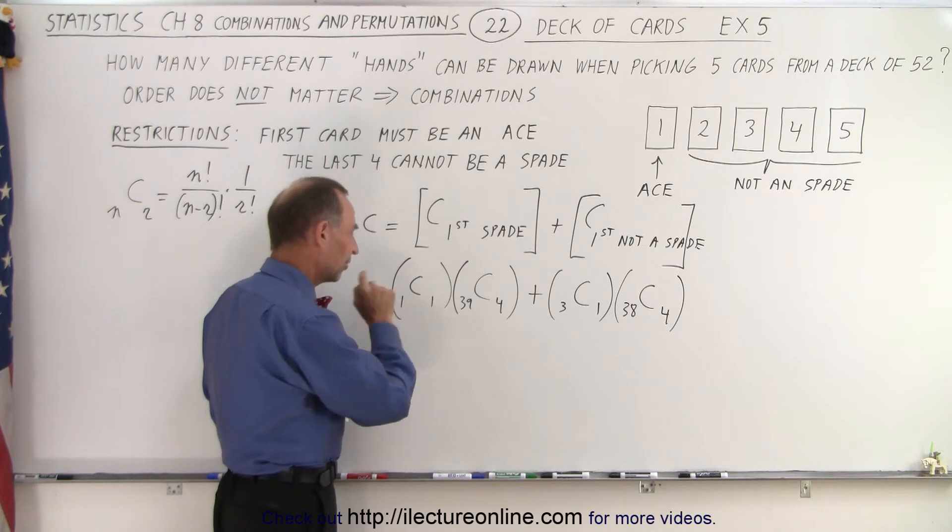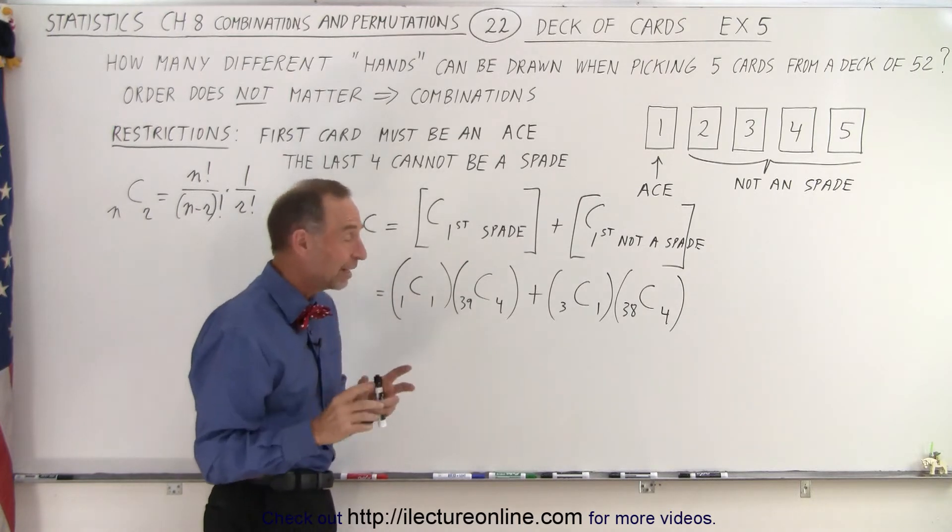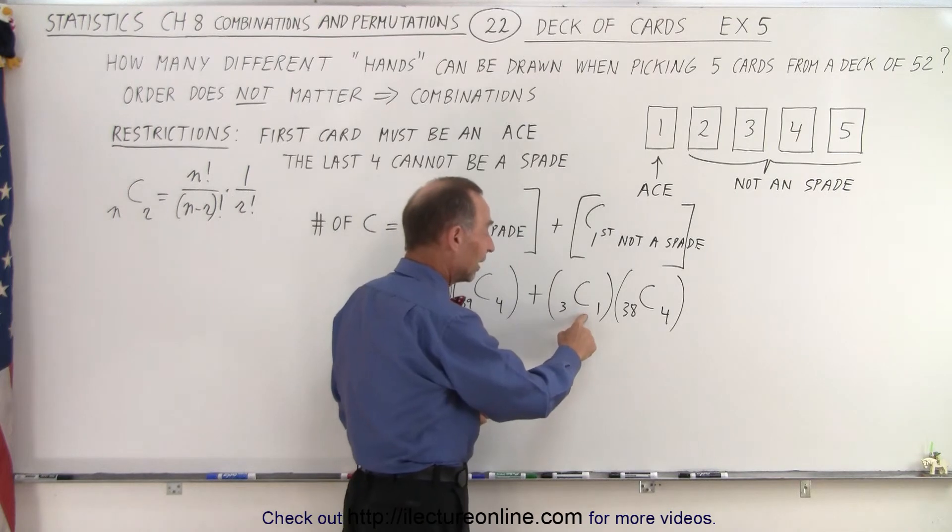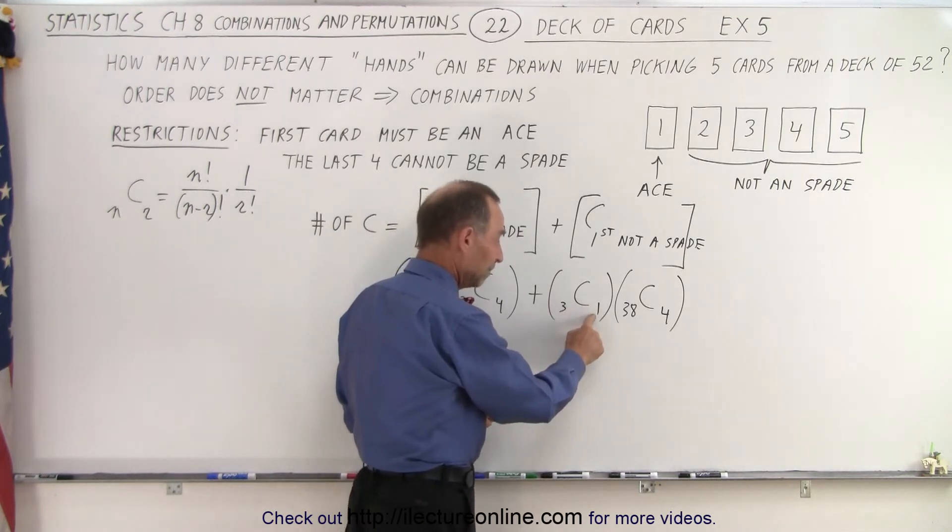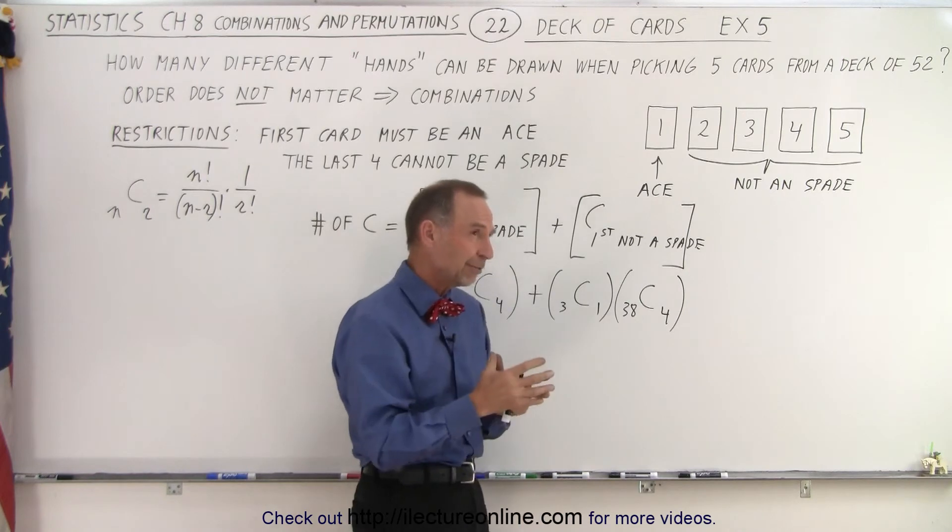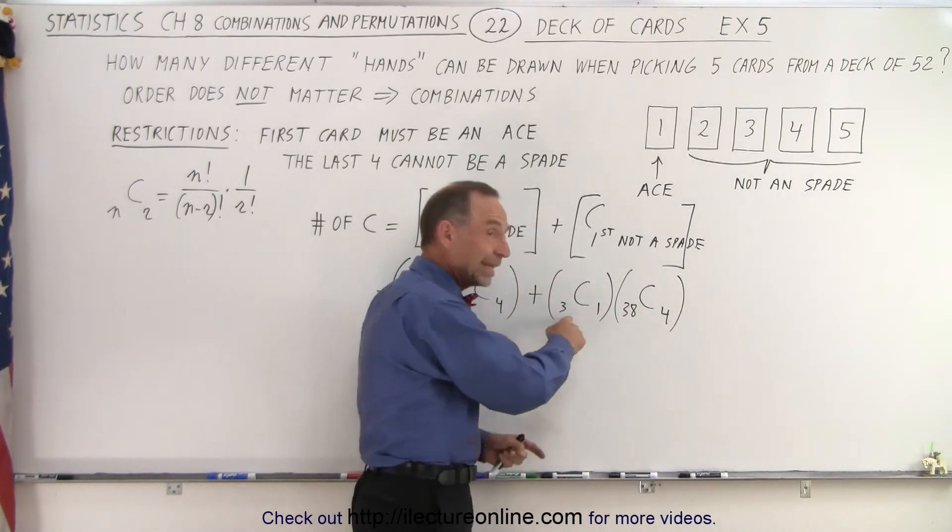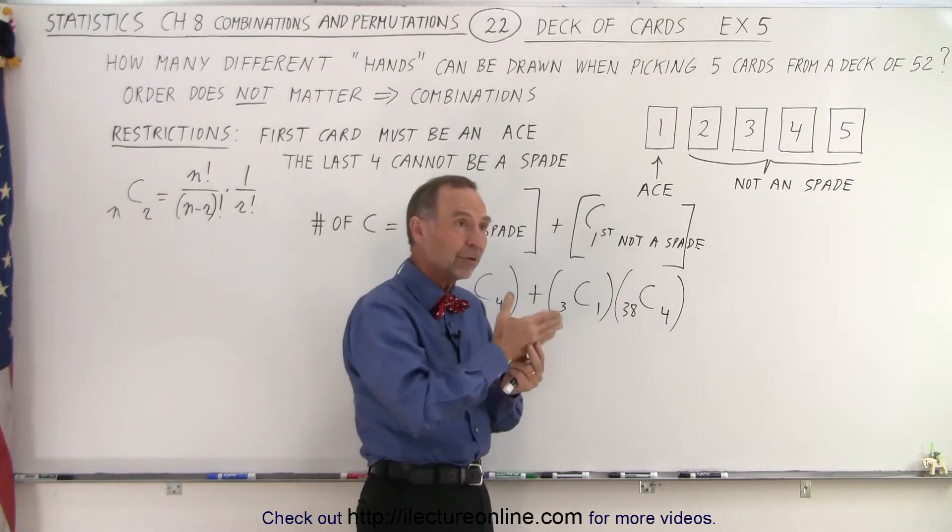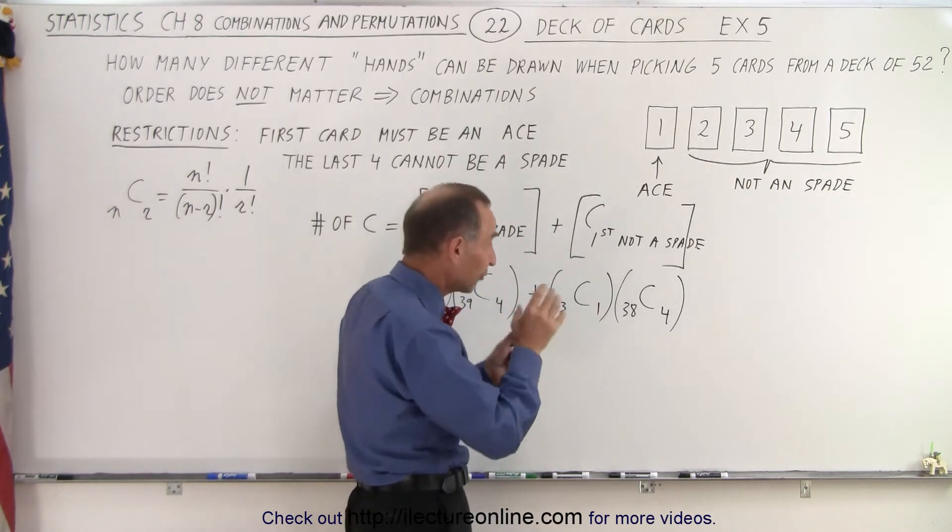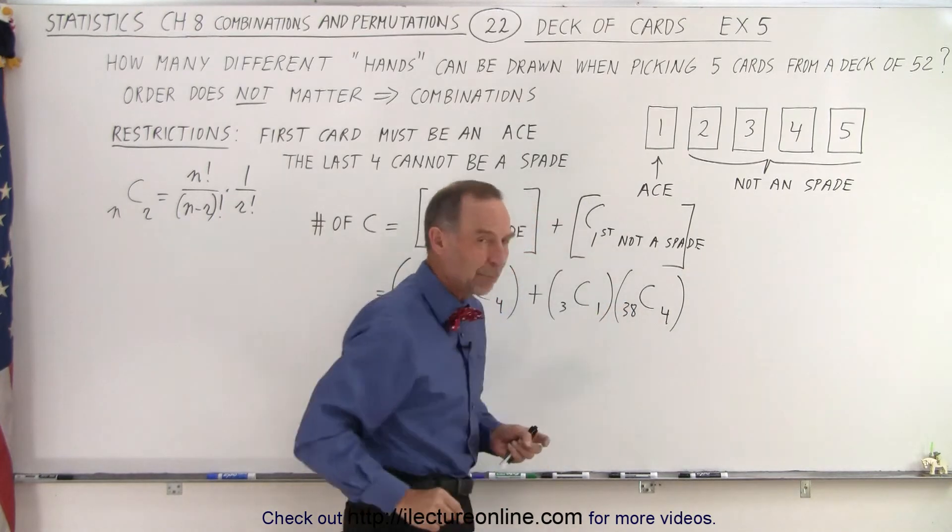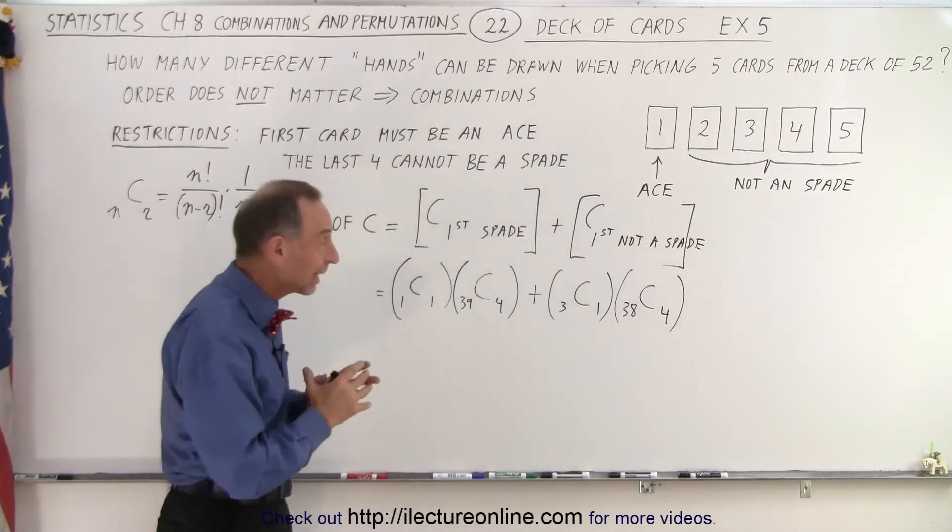That's provided the first card was the ace of spades. But if we don't pick the ace of spades on the first card, we pick one of the other aces, then there's three aces that are not spades, we pick one. And then, how many cards are left to pick from? Well, all 13 spades are still in the deck, and one of the aces is already gone. So 1 plus 13 is 14. We subtract 14 from 52, we only have 38 cards left to pick from, and we pick four. Once we calculate that, that will give us the total number of combinations that we can possibly pick.